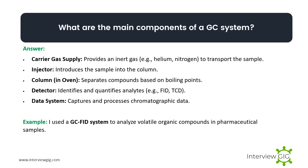What are the main components of a GC system? The main components include: carrier gas supply, which provides an inert gas to transport the sample; injector, which introduces the sample into the column; column, which separates compounds based on boiling points; detector, which identifies and quantifies analytes; and data system, which captures and processes chromatographic data. Example: I use a GC-FID system to analyze volatile organic compounds in pharmaceutical samples.